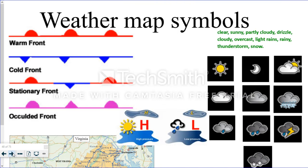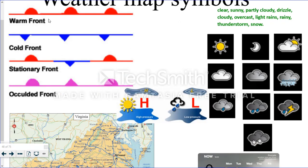Here are a couple of symbols that you might see on a weather map. We've already discussed the warm, cold, stationary, and occluded fronts. Here's what high and low air pressure systems look like. A high pressure system comes in, and it usually brings sunny weather. A low pressure system comes in, and it usually brings rain.